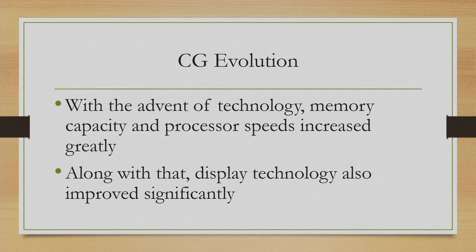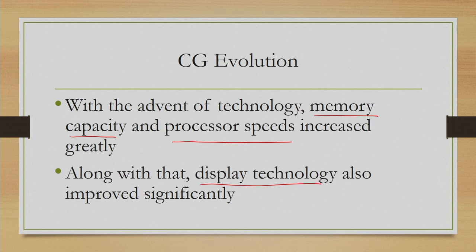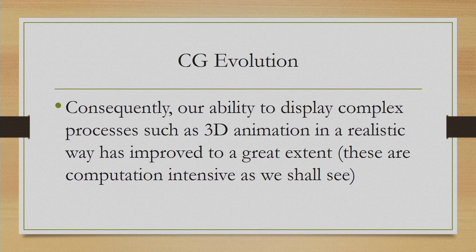With the advent of technology, other things changed — we now have higher memory capacity and increased processor speeds. Along with those changes, display technology also improved significantly. So we had three broad developments: memory capacity enhancement, processor speed increase, as well as improvement in display technology. All three contributed together to make it possible to display complex 3D animation, which is computationally intensive and assumes we are capable of performing computations in real time.